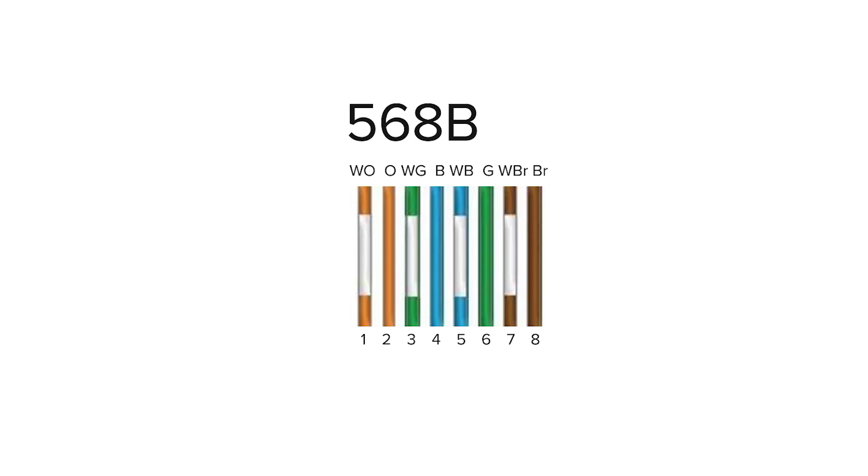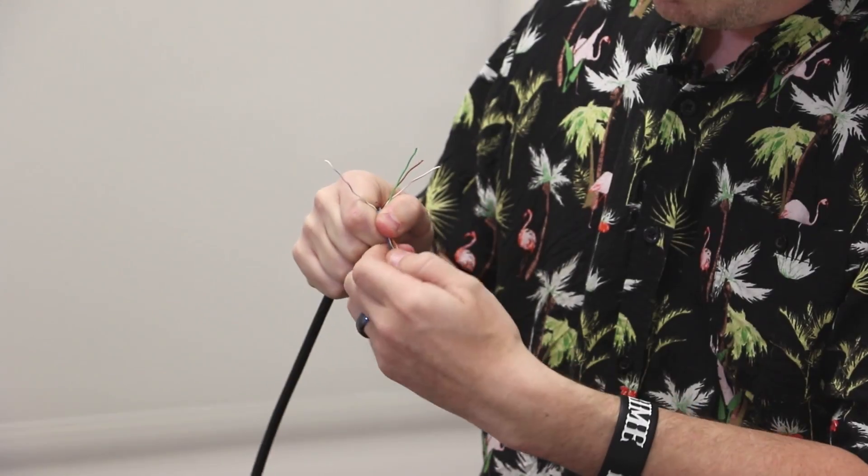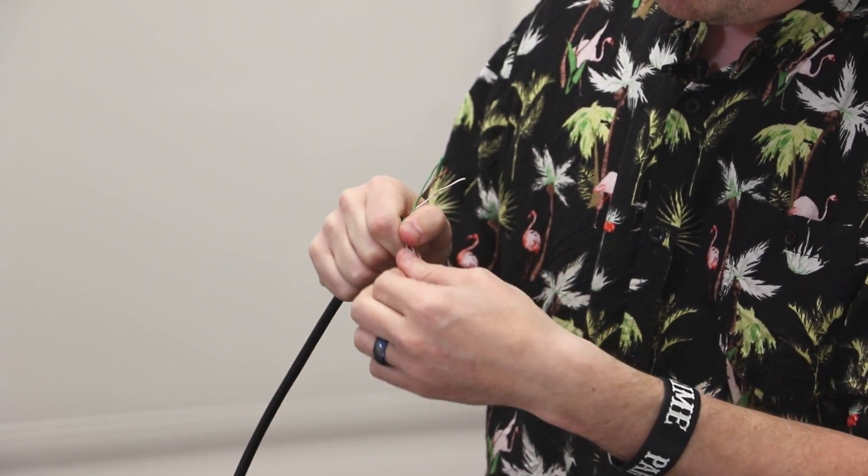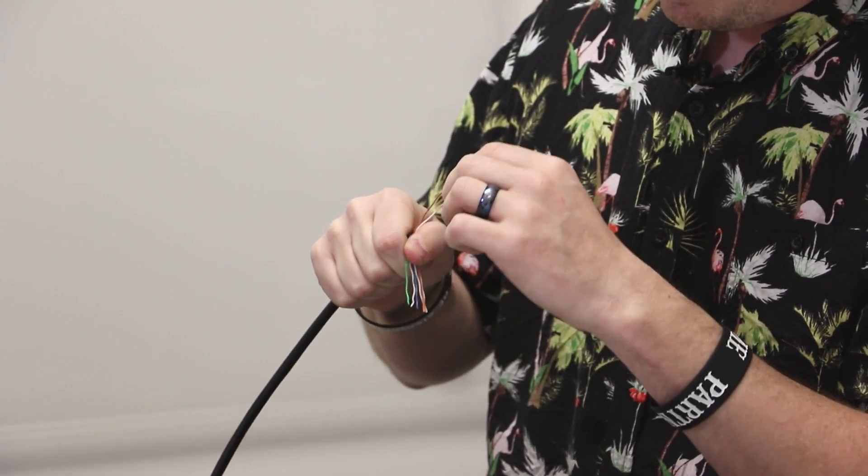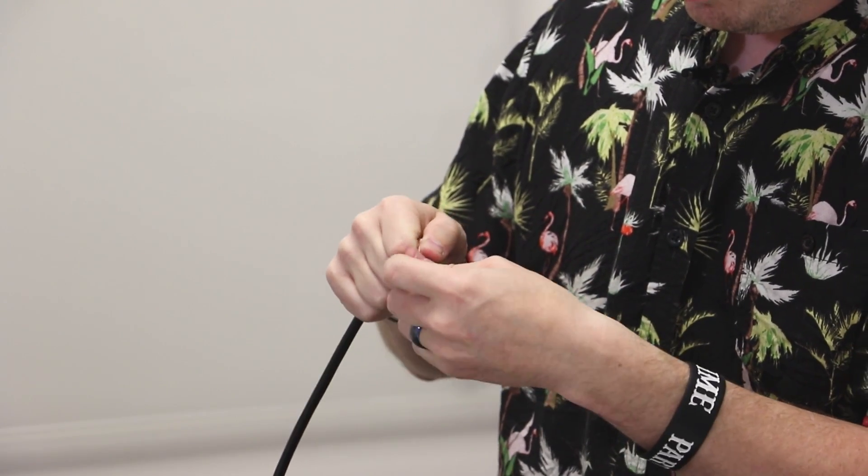You can see I'm starting with orange white and then orange, green white, blue, blue white, green, brown white, brown.